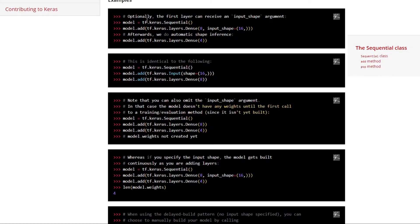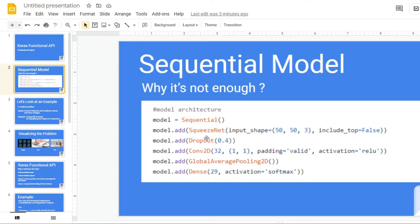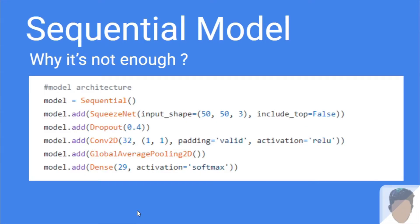But the issue with the sequential model is that it's a simple model. In real life cases, this doesn't help. What we do is keep on defining layers over layers over layers, so finally what we get is a stack of layers which is linear in its traversal. But real life deep learning problems are not so linear — we don't have only one set of inputs and a single output to focus on.